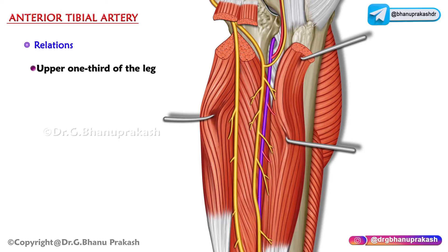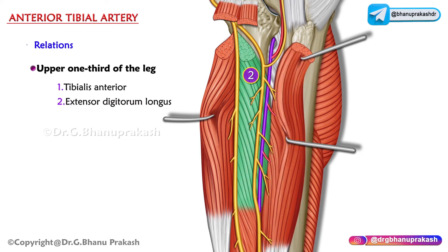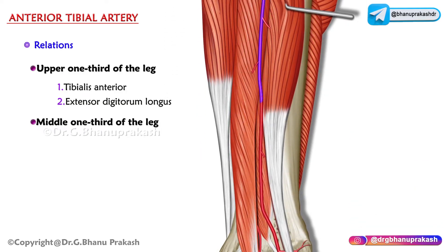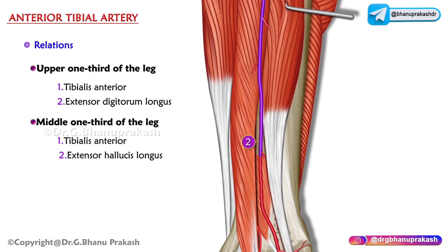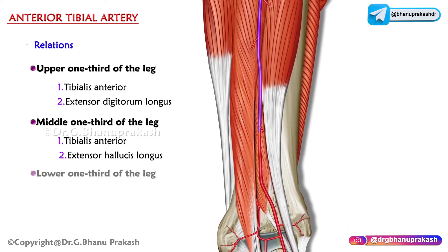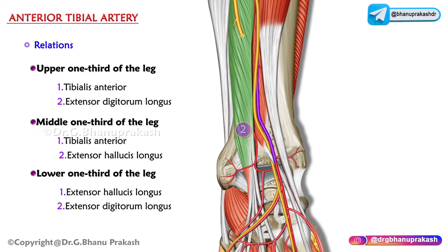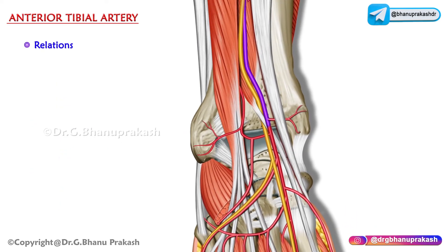Regarding the relations of the anterior tibial artery: in the upper one third of the leg, it lies between the tibialis anterior and extensor digitorum longus muscles. In the middle one third, it lies between the tibialis anterior and extensor hallucis longus. In the lower one third, it lies between the extensor hallucis longus and extensor digitorum longus.